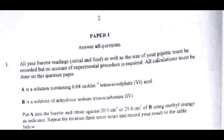As usual, you are always expected to answer all questions. Question 1 says all your burette readings — initial and final — as well as the size of your pipette must be recorded, but no account of experimental procedures is required. All calculations must be done on the question paper. Solution A is a solution containing 0.04 moles per dm³ of tetraoxosulphate(VI) acid, H₂SO₄. Solution B is a solution of anhydrous sodium trioxocarbonate(IV), Na₂CO₃. Put A into the burette and titrate against 20 cm³ or 25 cm³ of B using methyl orange as indicator. Repeat the titration three more times and record your results in the table below.